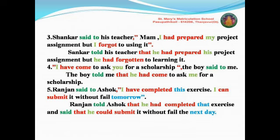Next, pronoun changes: 'my' will be changed into 'his', because 'he' refers to Shankar — 'his project assignment'. He had prepared his project assignment. Bring 'but' as it is — it's a conjunction. Two sentences are given, so write the conjunction word as it is. Then 'I' changes into 'he'. 'Forgot' — past tense will be changed into past perfect: 'had forgotten'. To bring it — write as it is. Shankar told his teacher that he had prepared his project assignment, but he had forgotten to bring it.